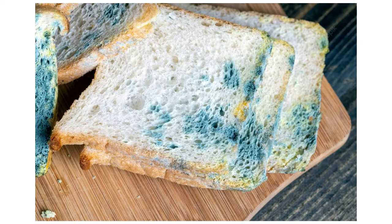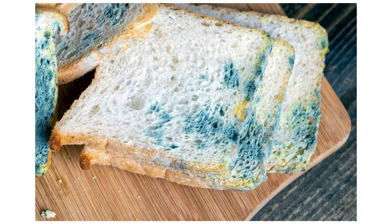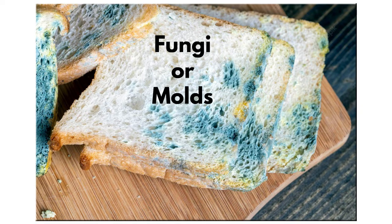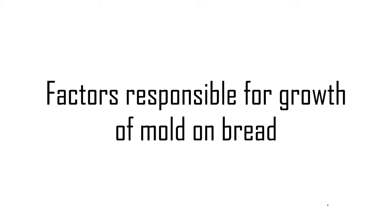We often see green or black patches on bread. This is nothing but spoiling of bread due to the growth of microorganisms called fungi or molds. So, what are the factors responsible for the growth of mold on bread?